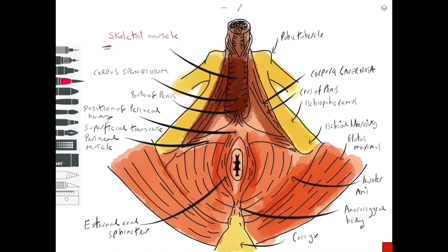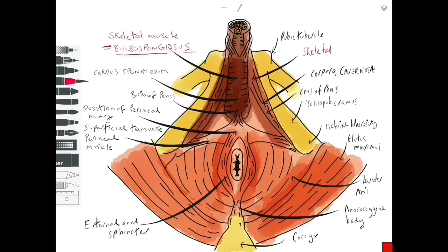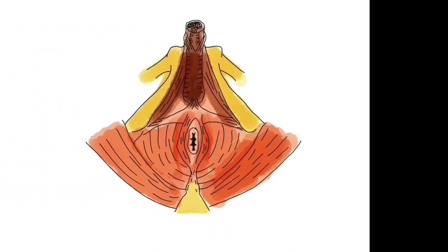Sitting on top of that we have some skeletal muscle covering the erectile tissue — covering the bulb of the penis and the corpus spongiosum is skeletal muscle known as the bulbospongiosus. Covering the crura of the penis on either side and the corpora cavernosa is skeletal muscle called the ischiocavernosus muscle.